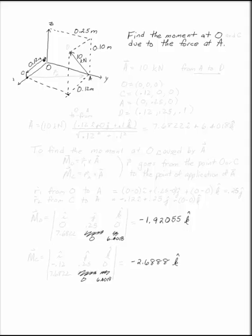Find the moment at O due to the force of A. The magnitude of the force of A is 10 kN. We want to find out how that tends to turn point O and point C.